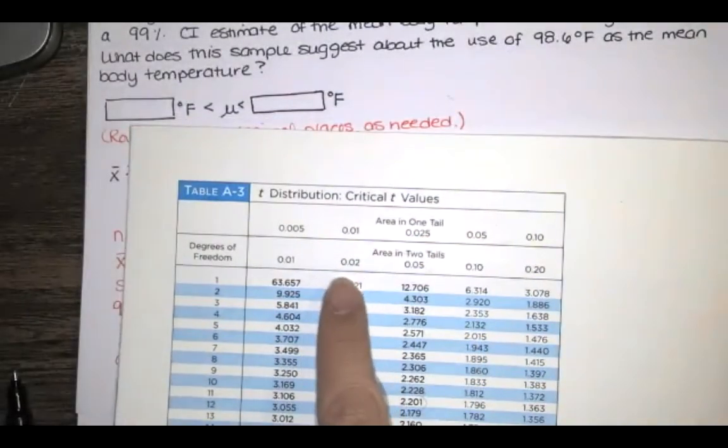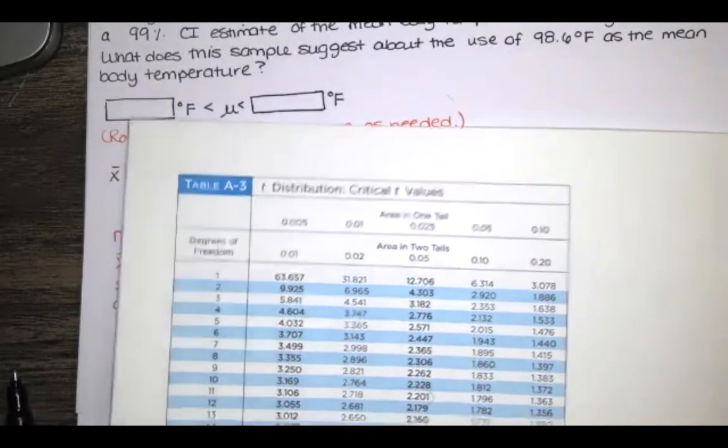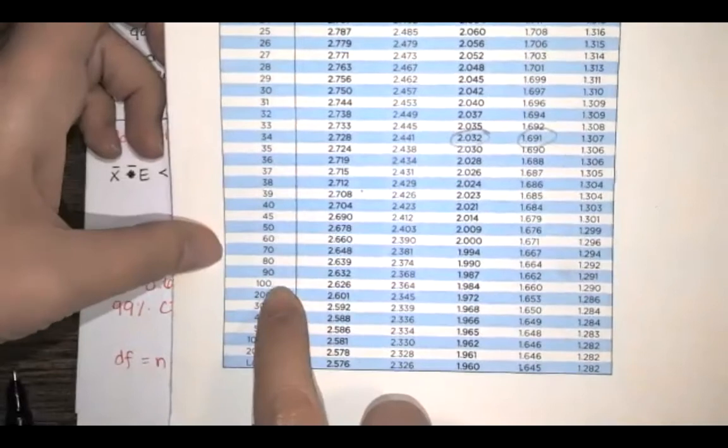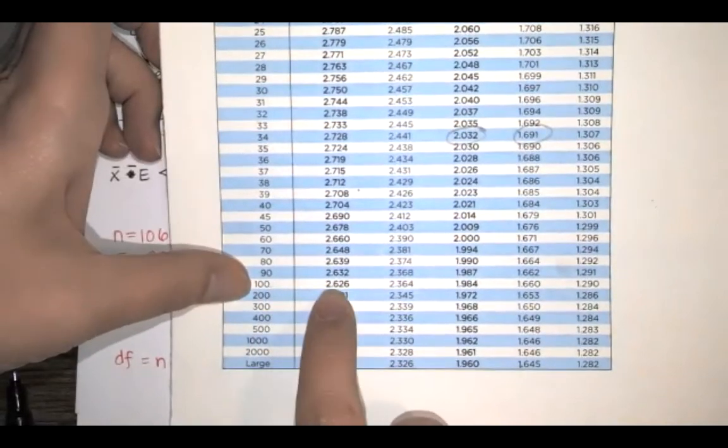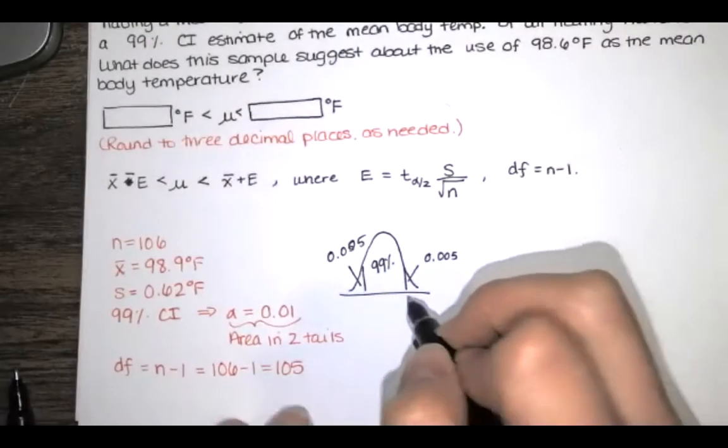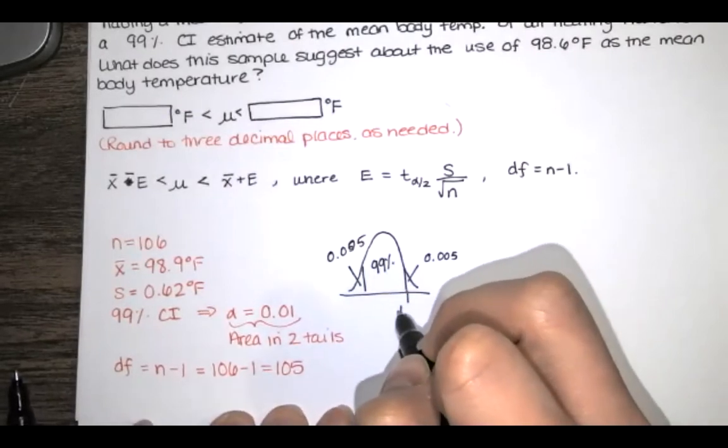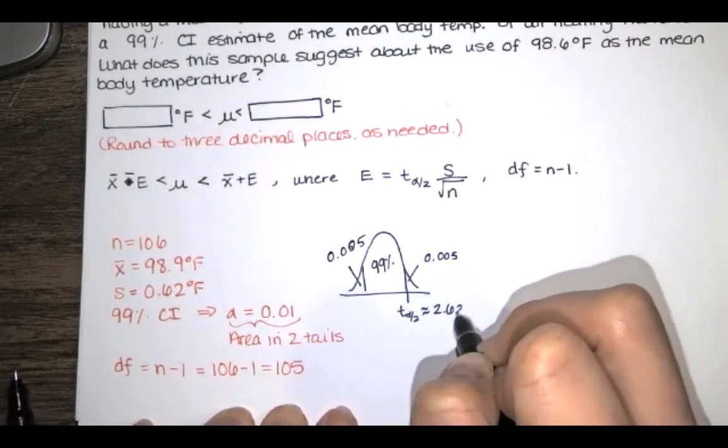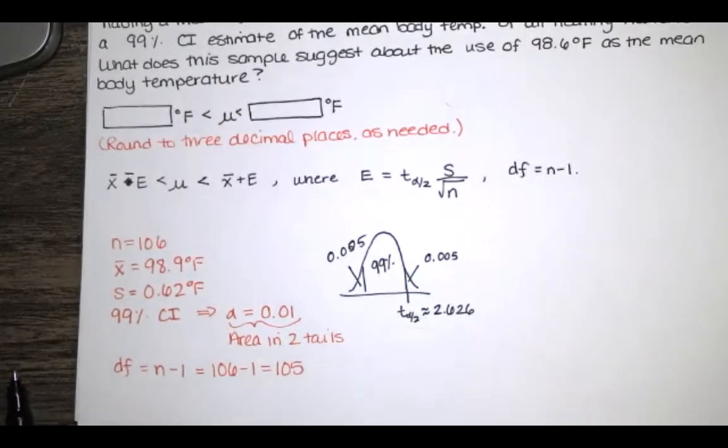So we're going to round to 100, and then we'll look for area in two tails of 0.01. Area in two tails of 0.01 is right here, in this first column. So the closest T score that we have, according to this table, is T equals 2.626. So t sub α/2 is approximately 2.626.